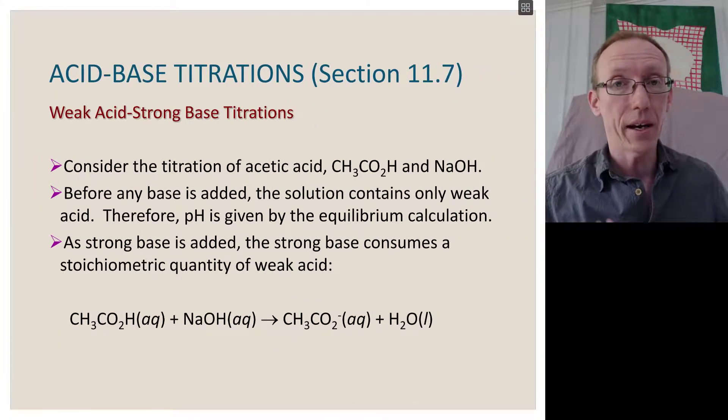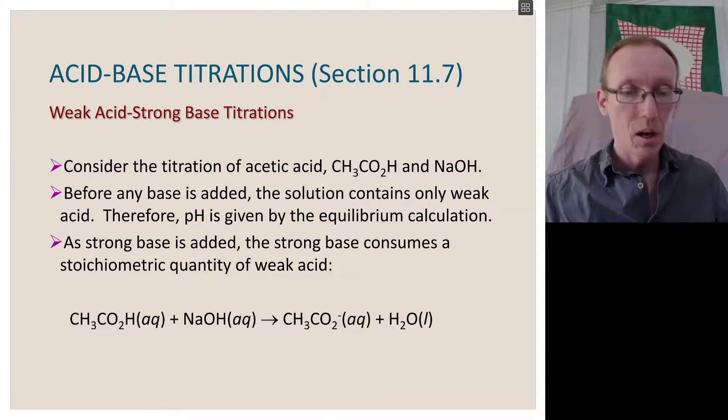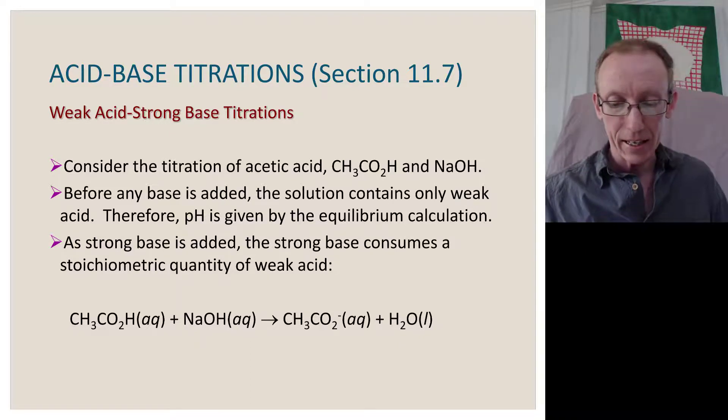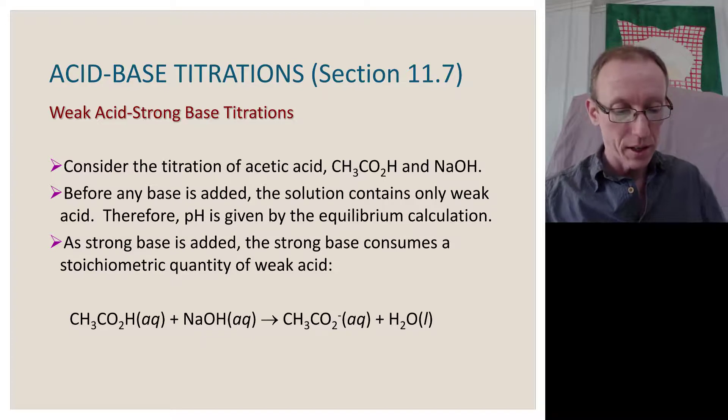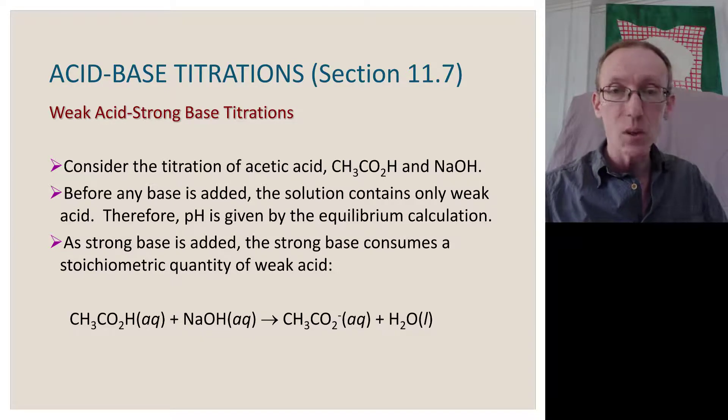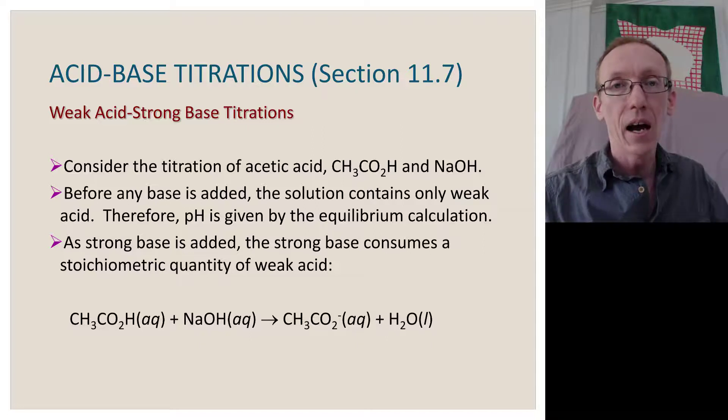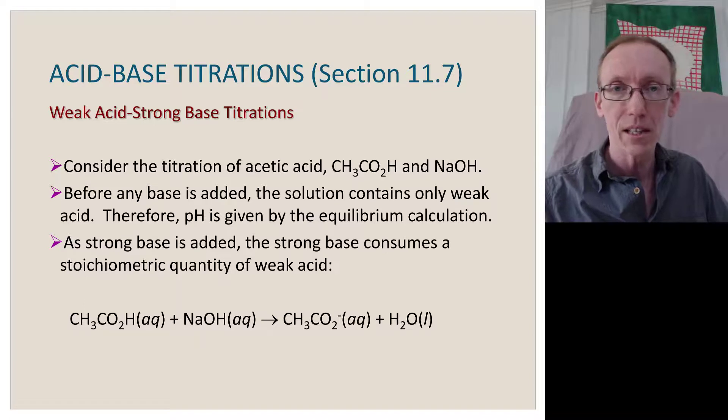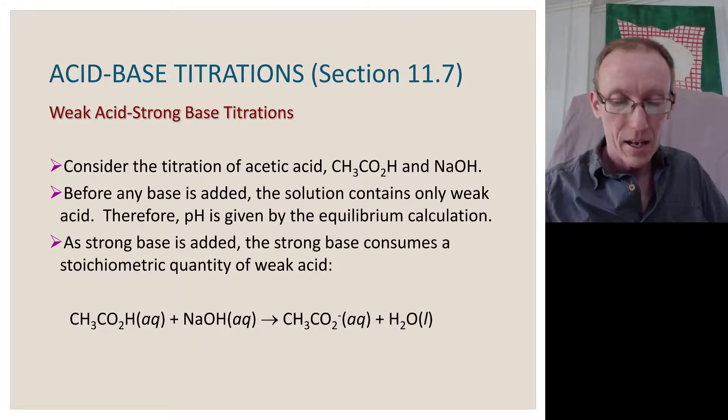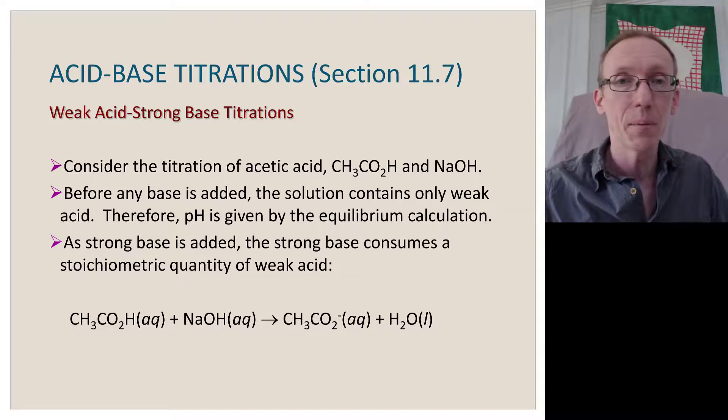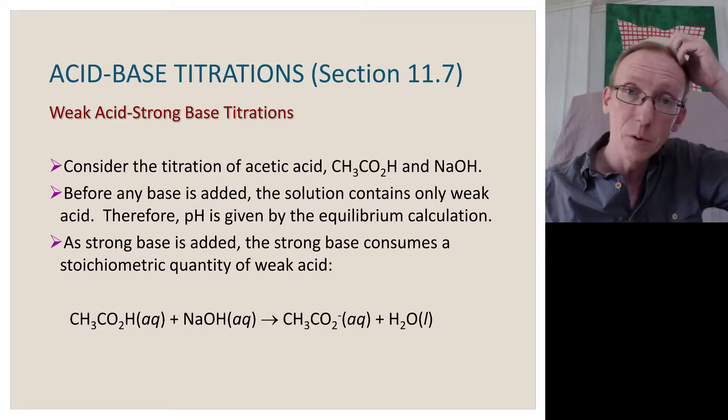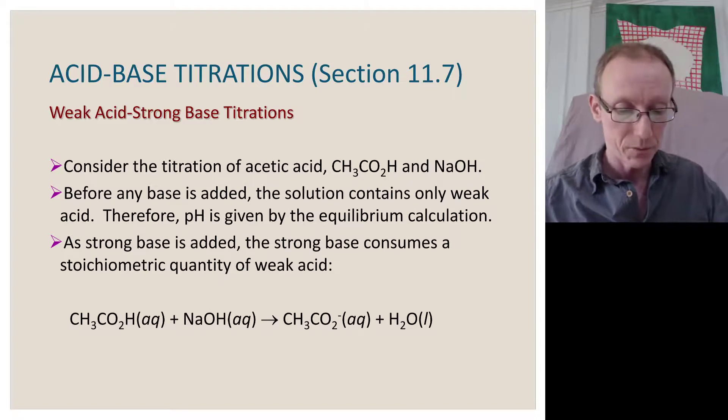We might want to do a titration of a weak acid with a strong base to find out what the concentration of that weak acid is. If we titrate acetic acid with sodium hydroxide, before any base is added to the solution, it only contains a weak acid, so the pH is not that low. A strong acid will have a very low pH, like hydrochloric acid at the right concentration might have a pH of 1. The pH of an acetic acid solution might only be a pH of 5 or 4 or 6, not particularly far removed from the 7 that we'd have of neutral water.